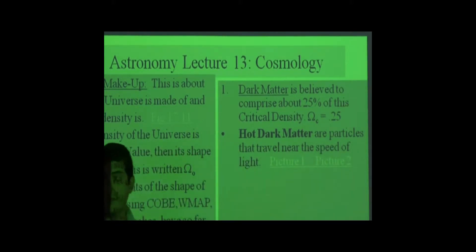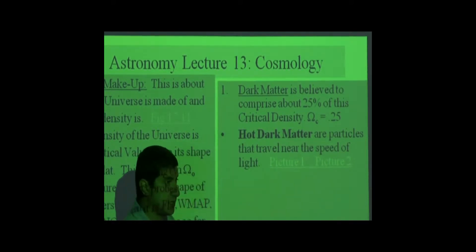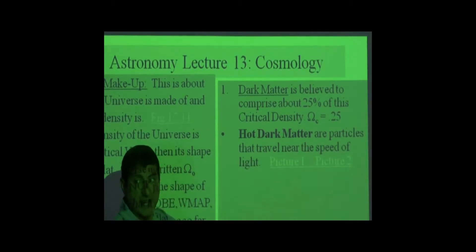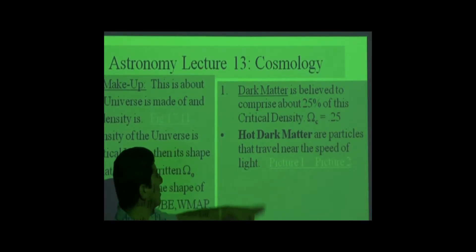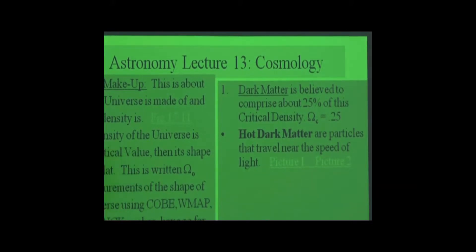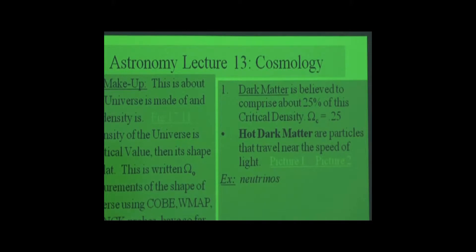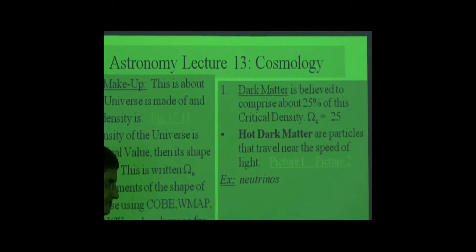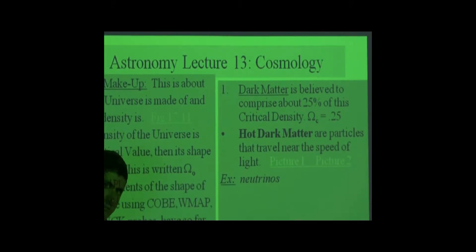Then there's non-baryonic dark matter, and those are these. These are known as non-baryonic dark matter. They're divided up into hot dark matter, which are particles that travel near the speed of light. Example of those, neutrinos. Those are proposed examples of hot dark matter.